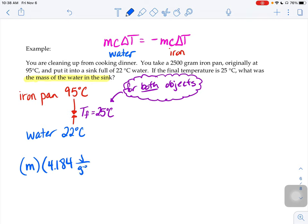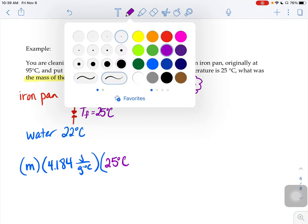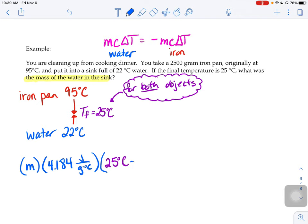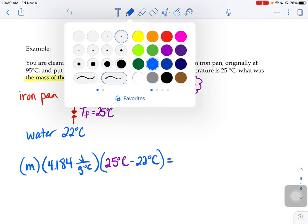Now I need the delta T. So the T final for my iron and the water for both objects is 25. The water started at 22.